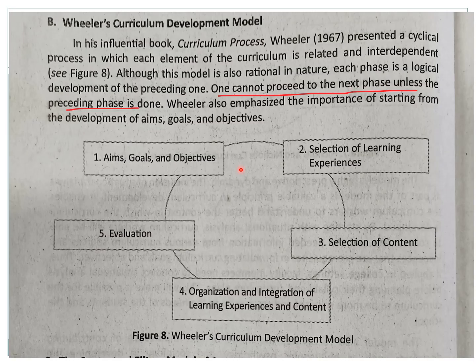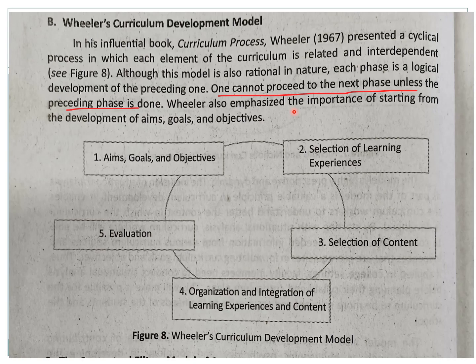The second submodel is Wheeler's Curriculum Development Model. What it emphasizes is that one cannot proceed to the next phase unless the preceding phase is done — there's a prerequisite before proceeding. The steps are: aims, goals, and objectives identification; selection of learning experiences; selection of content; organization and integration of learning experiences; and evaluation. It is similar to Tyler's but in Wheeler's model it follows a cyclical continuous process and pattern — it doesn't have a beginning, neither does it have an end.